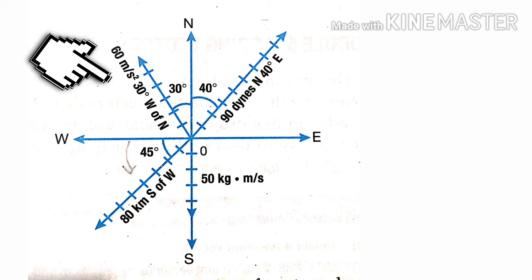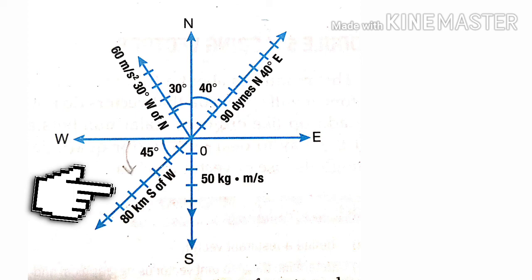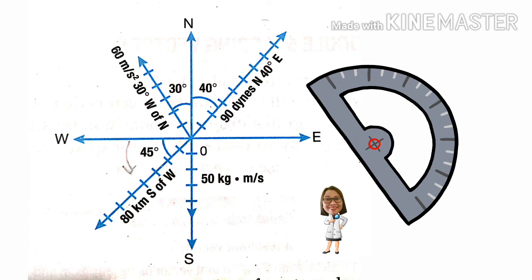A linear momentum of 50 kilogram meters per second south, a displacement of 80 kilometers 45 degrees south of west. Don't forget to use a protractor to measure the angle and ruler to measure the magnitude of the vector.